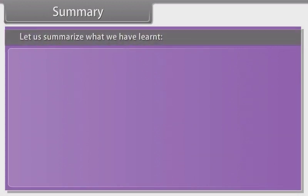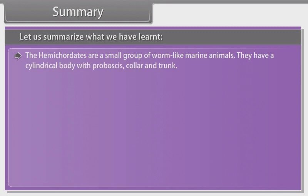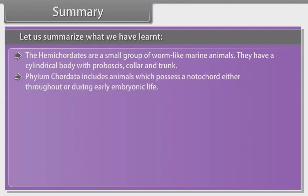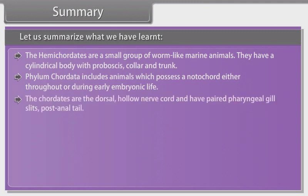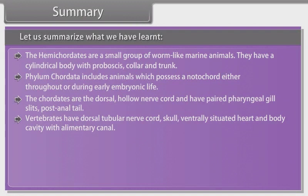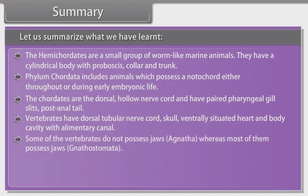Summary. The hemichordates are a small group of worm-like marine animals with cylindrical body comprising proboscis, collar and trunk. Phylum Chordata includes animals which possess a notochord either throughout or during early embryonic life. Chordates have a dorsal hollow nerve cord, paired pharyngeal gill slits and a post-anal tail. Vertebrates have a dorsal tubular nerve cord, skull, ventrally situated heart and body cavity with alimentary canal. Some vertebrates do not possess jaws (Agnatha), whereas most of them possess jaws (Gnathostomata).